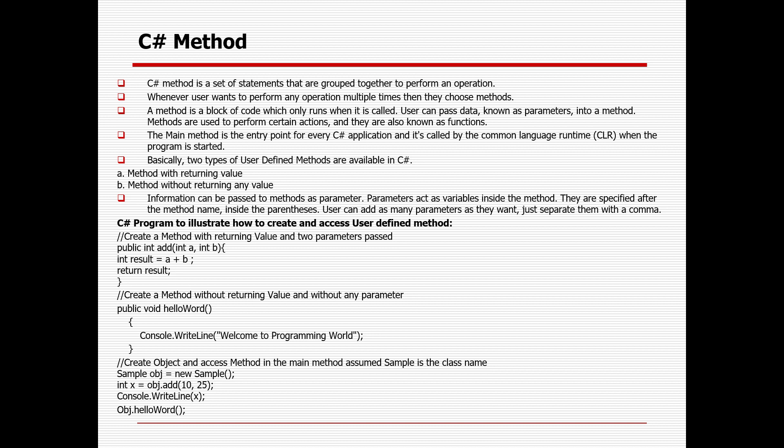Basically there are two types of methods available in C#: one is user-defined method and one is the already available inbuilt C# method. In the last couple of videos we already saw the string class — in the string class there are a lot of methods available, those are called inbuilt methods. For user-defined methods, there are two primary categories: method with returning value, which will return some value, and method without returning any value.